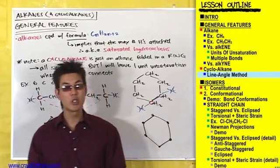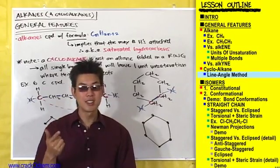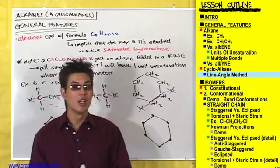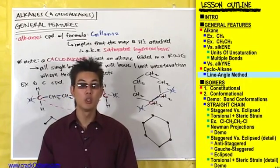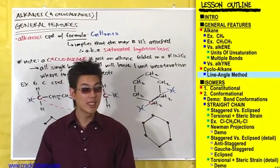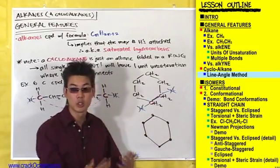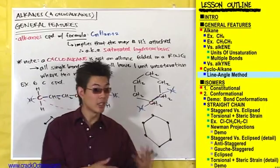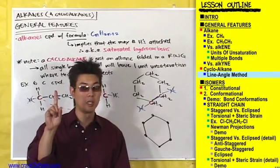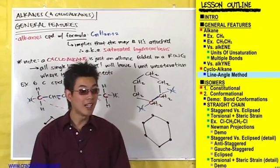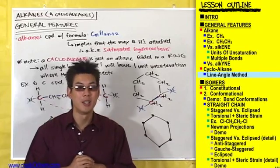The take-home message is that you're going to see units of unsaturation in terms of double bonds, triple bonds, and rings. If you ever have unsaturation it will be from one of those three things. Rings have one unit of unsaturation because they lose two hydrogens to close the ring. Double bonds, or alkenes, have one unit of unsaturation because they have one multiple bond. Triple bonds, or alkynes, have two units of unsaturation because they have two multiple bonds.